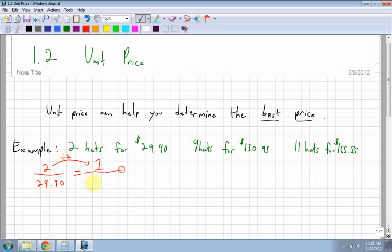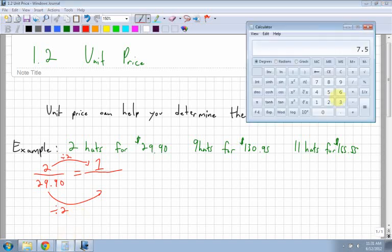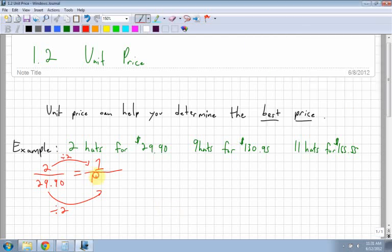So if I'm looking at the bottom of the fraction, I also have to divide by 2 to get a unit cost per 1. So I take $29.90, divide by 2, and I get $14.95. So for 1 hat, it's $14.95.